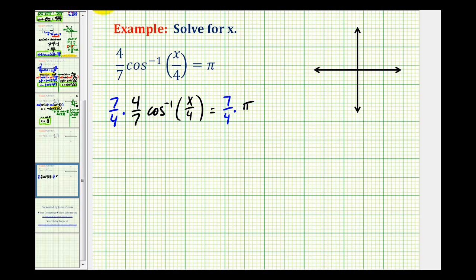By multiplying by the reciprocal, this simplifies nicely to one. On the left side, we have inverse cosine of x divided by four, and on the right, we have seven pi over four.